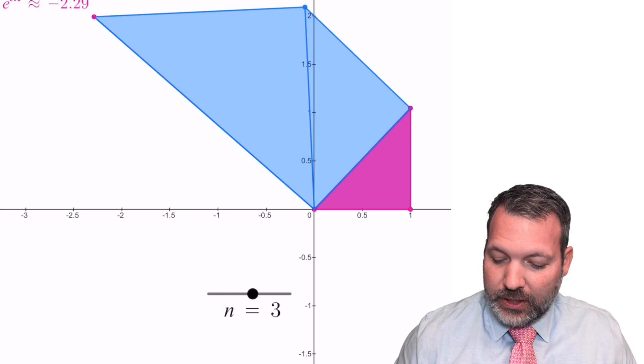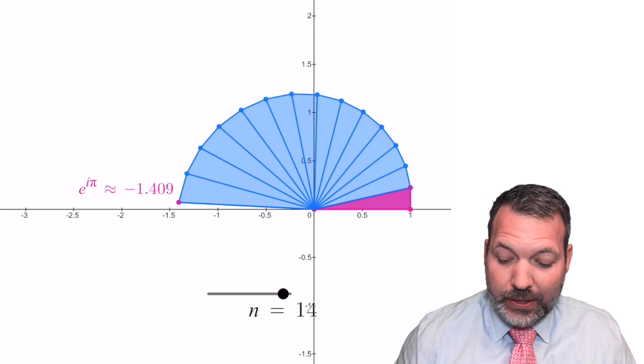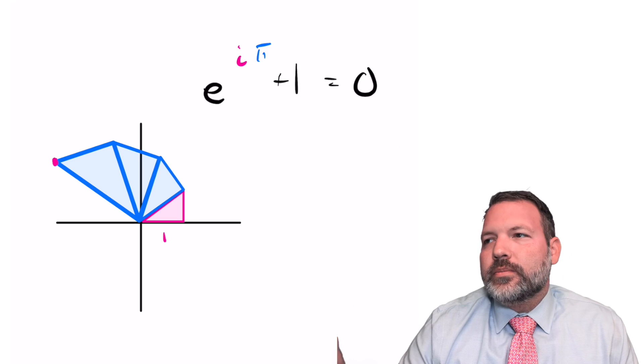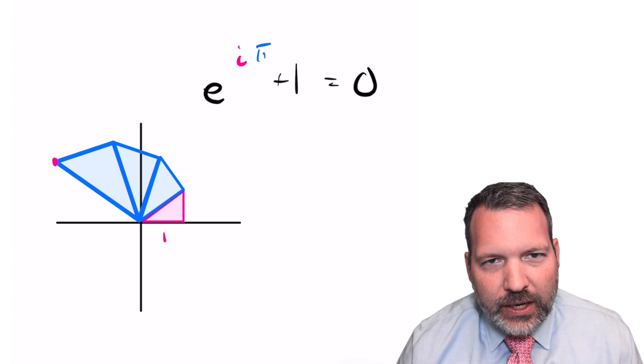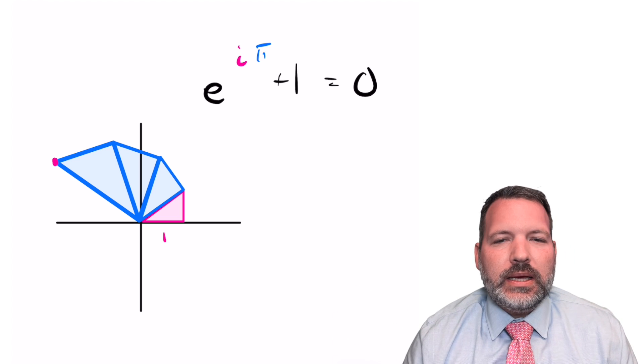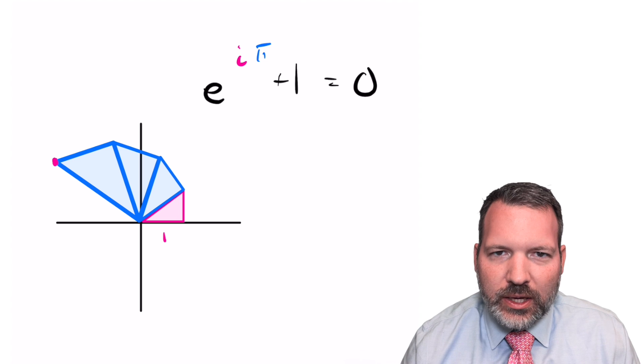So without further ado, let's get this thing done. E to the i pi equals negative one. Welcome to a video I have been waiting ages to do explaining e to the i pi plus one equals zero.